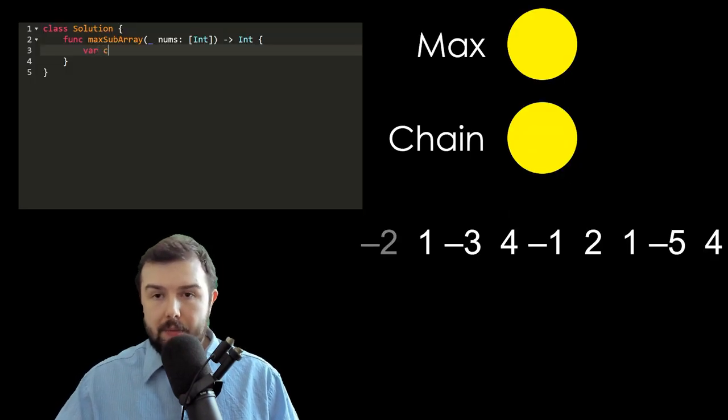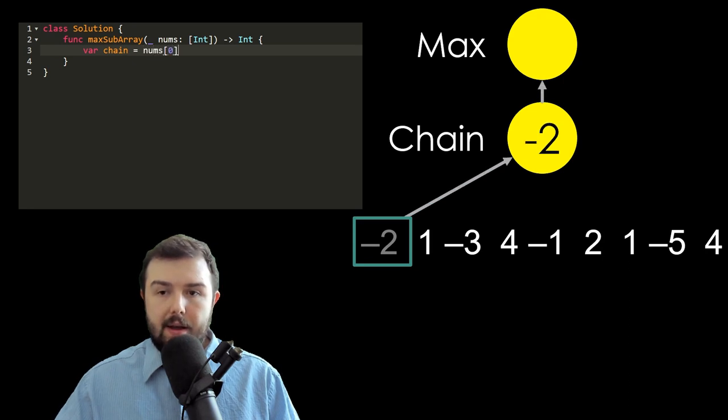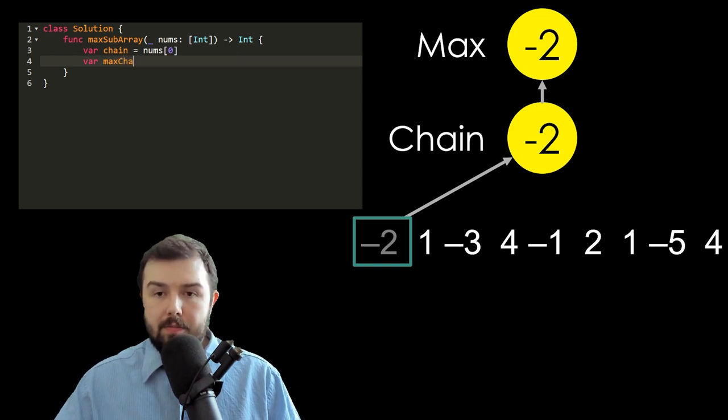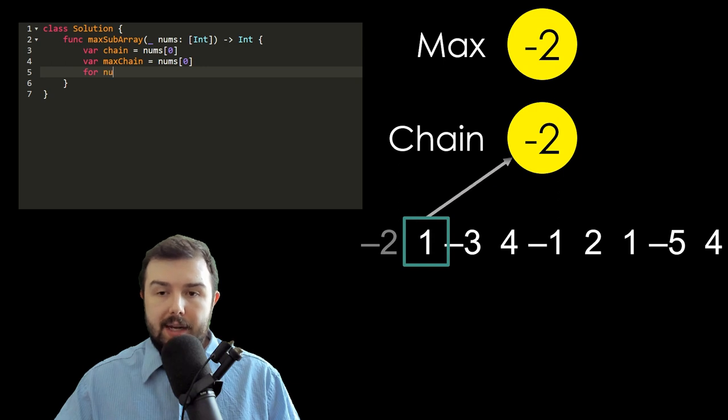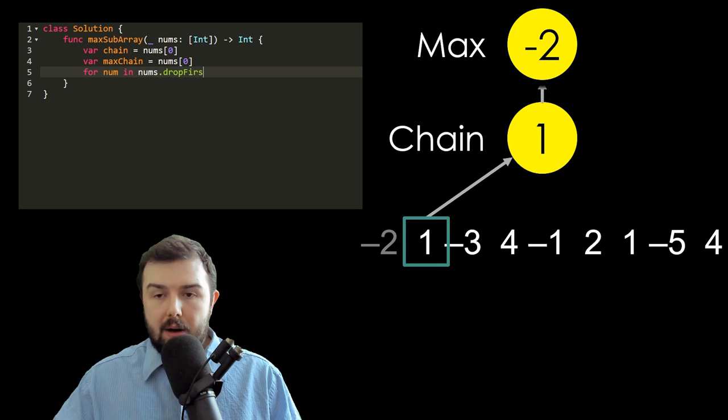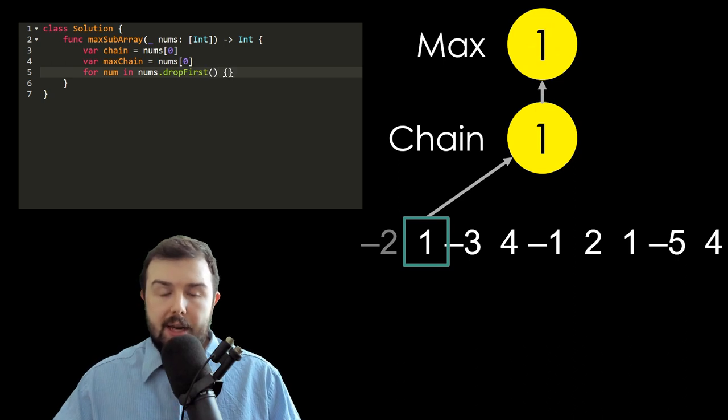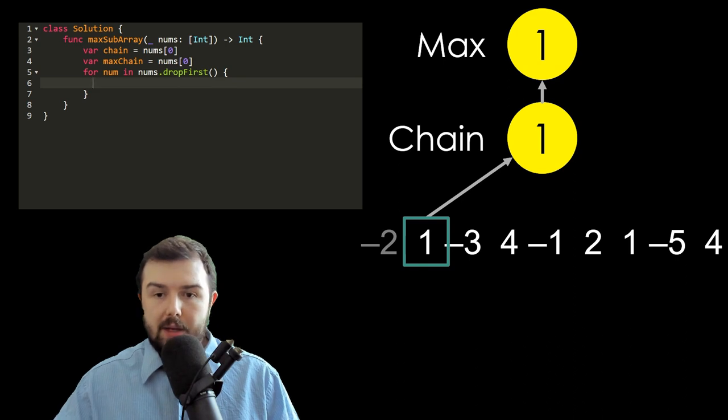So we will start with saving the first item of the array in a chain and save it as the maximum value for now. And then let's start from the second value. The second value, one, replaces our chain and it's greater than minus one, so our current maximum is one.